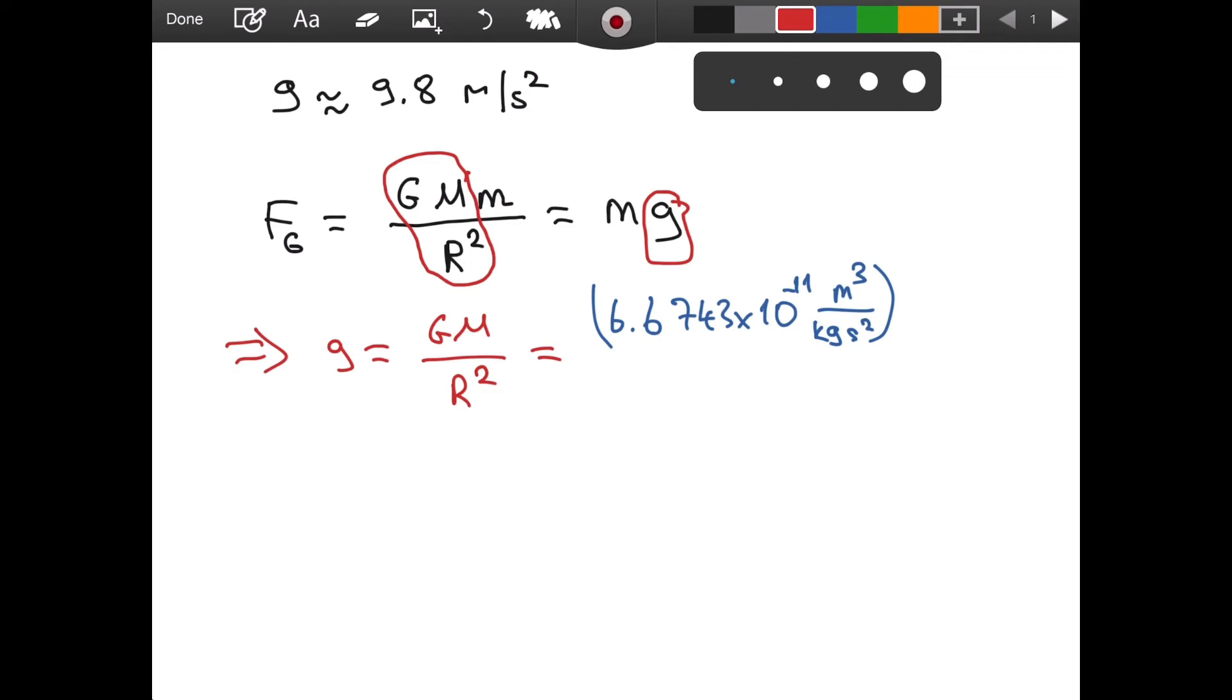So for M, this is the, as I said, mass of the earth. It is going to be 5.972 times 10 to power of 24. A huge mass. This is in kilograms. And then we have our division.